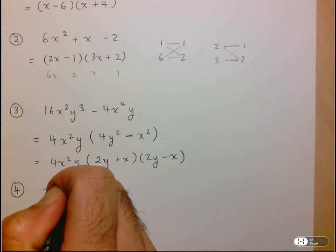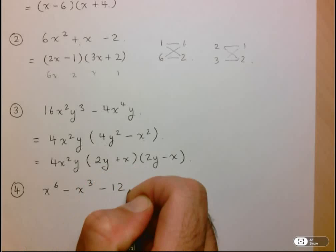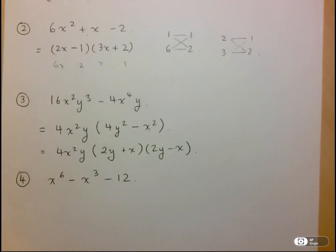So let's take the example of x⁶ - x³ - 12. Now here this is not a quadratic trinomial. However, we can factor it in a similar way to a quadratic trinomial.